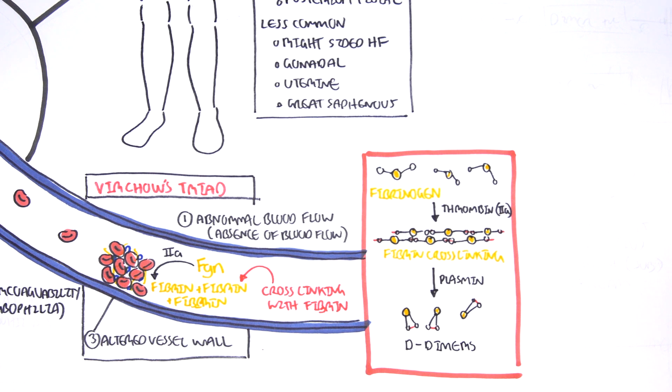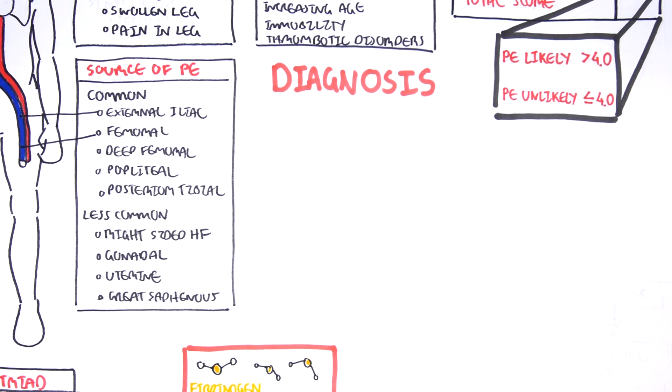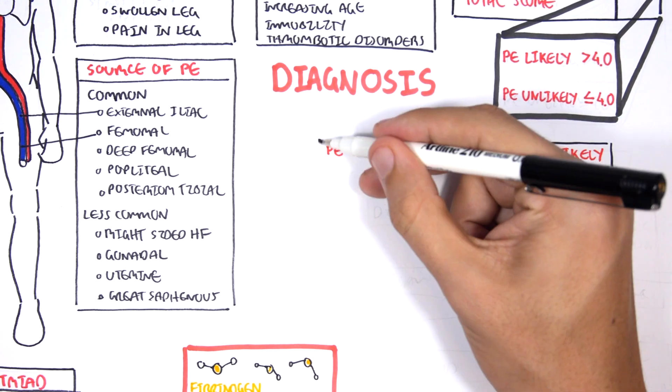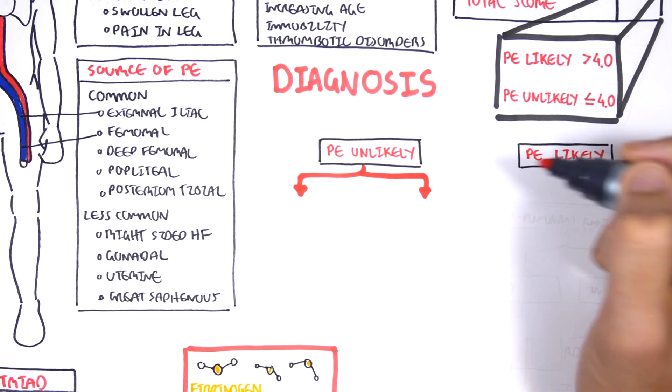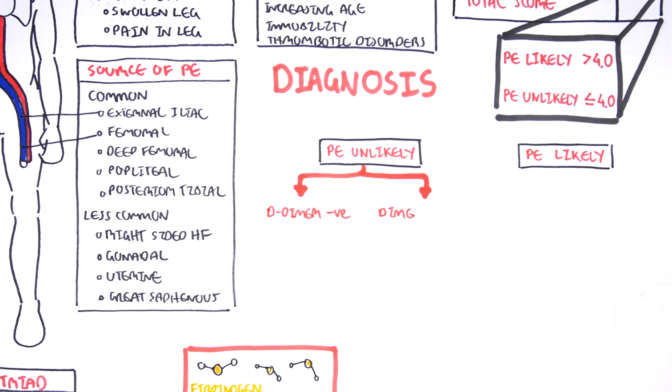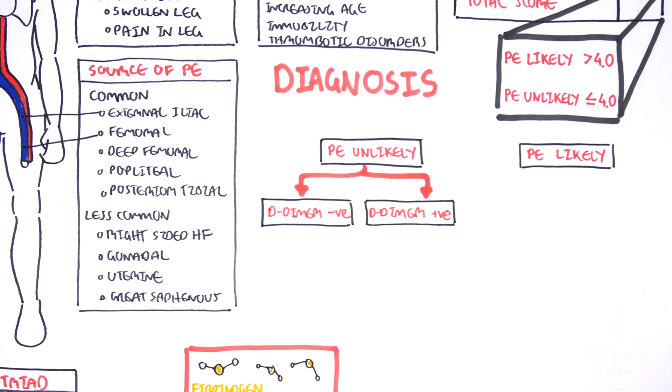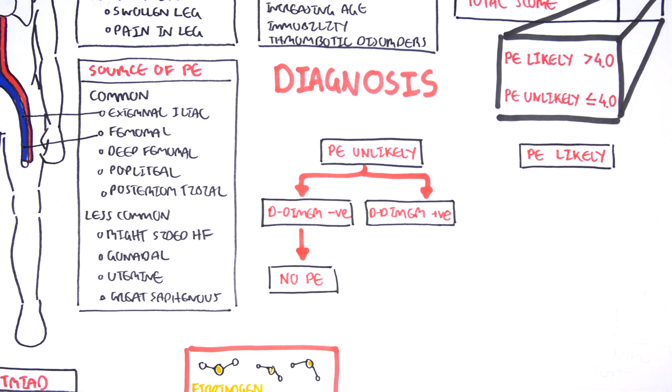Back to the diagnosis algorithm and the Wells criteria. Using the Wells criteria, you can either have pulmonary embolism unlikely or pulmonary embolism likely. We'll begin by looking if you have pulmonary embolism unlikely and you do the D-dimer assay and you can either get negative or positive. If it's negative and it's pulmonary embolism unlikely, then you most likely don't have PE so you don't do treatment.